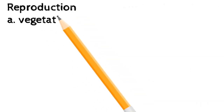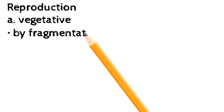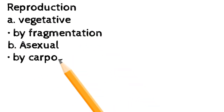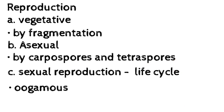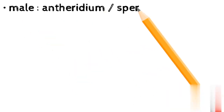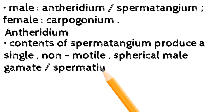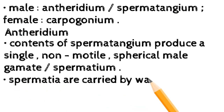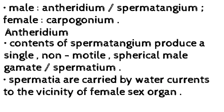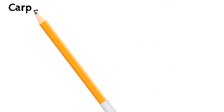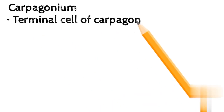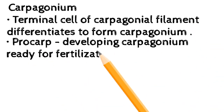Reproduction: (a) vegetative — by fragmentation; (b) asexual — by carpospores and tetraspores; (c) sexual reproduction. Life cycle: oogamous; most species are heterothallic. Male structure: antheridium/spermatangium. Female structure: carpogonium. Contents of spermatangium produce a single non-motile spherical male gamete (spermatium). Spermatia are carried by water currents to the vicinity of the female sex organ, the carpogonium, which is the terminal cell of the carpogonial filament.